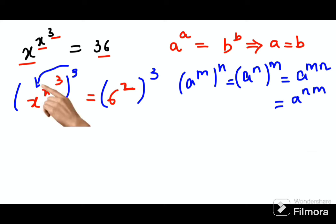Using this logic, I can shift this 3 ahead. So this looks like x raised to 3 the whole raised to x raised to 3, and we know that this is eventually becoming 6 raised to 2 into 3, which becomes 6 raised to 6.